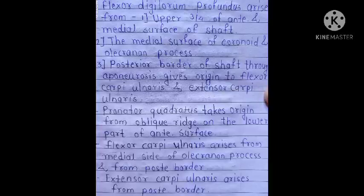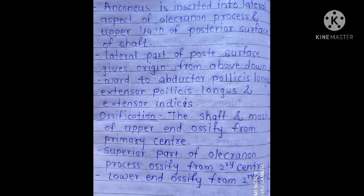Flexor digitorum profundus arises from the upper three-fourths of the anterior and medial surface of the shaft, the medial surface of the coronoid and olecranon process, and the posterior border of the shaft. Through aponeurosis it gives origin to flexor carpi ulnaris and extensor carpi ulnaris. Pronator quadratus takes origin from the oblique ridge on the lower part of the anterior surface. Flexor carpi ulnaris arises from the medial side of the olecranon process and from the posterior border. Extensor carpi ulnaris arises from the posterior border. Anconeus is inserted into the lateral aspect of the olecranon process and the upper one-fourth of the posterior surface of the shaft.